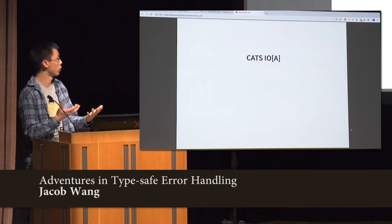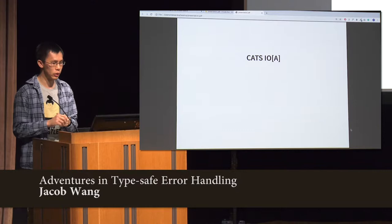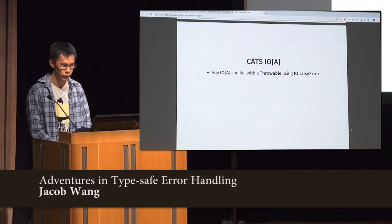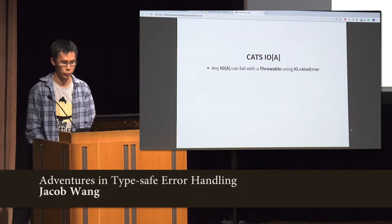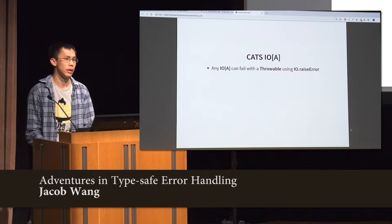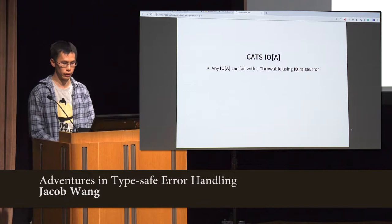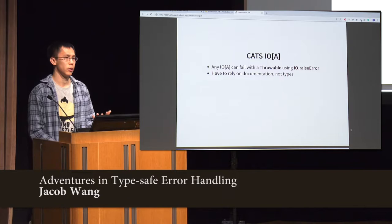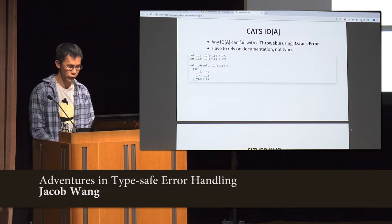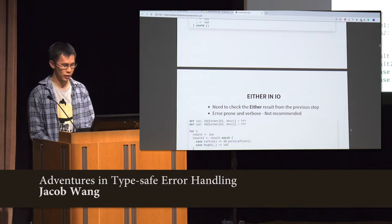Eithers are nice for normal validation of pure logic. But when you're dealing with side effects, if you want to do purely functional programming, you want to be able to represent effects as first-class values. That's where CATS IO and all the other effect types come in. You'll notice there's no error type in there — it's just an A, which represents the result of some sort of side-effect computation. That's because, at least with CATS and Monix as well, any IO can fail with Throwable. So all you know is that you can throw an exception and you can use IO.raiseError for that. So when you're using IO, you kind of have to rely on documentation — just like the good old days in Java, where you look at documentation to find out what exceptions can happen. You chain your stuff together and you have no idea what could go wrong.